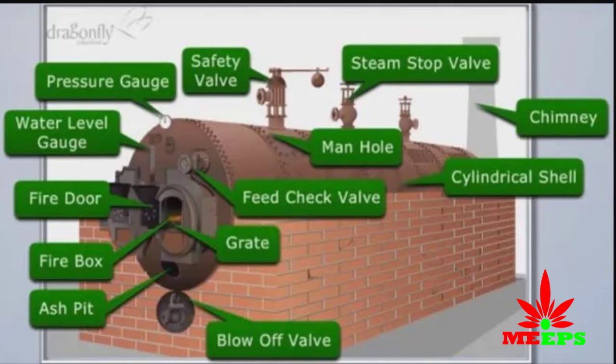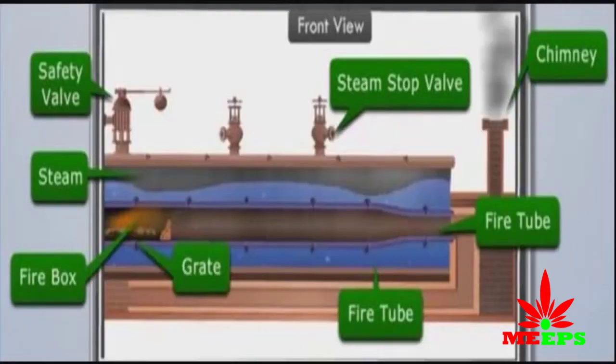Lancashire boiler is a horizontal drum type, natural circulation, natural draft, two-tubular, low pressure, stationary fire tube boiler with the furnace located internally. Its main purpose is to create steam, which is then used to drive steam turbines for power generation. It has high thermal efficiency of about 80 to 90 percent, and it is mostly used in locomotive engines and marine applications.